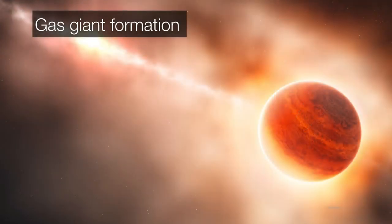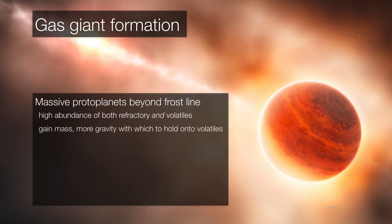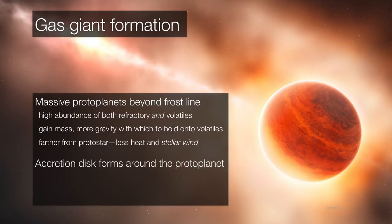So returning our attention to the gas giants, remember, they too are forming out of little disks within the disk. Remember, they're going to form well beyond the frost line, where there is a high abundance of both refractory elements and volatiles, so they have everything. They gain mass by just colliding with additional planetesimals. And because they have more mass, because they're now proper proto-planets in their own right, they're able to accrete these volatiles. Remember, they're farther from the protostar, so there's less heat, there's less stellar wind, and there's a greater abundance of these volatiles to begin with.